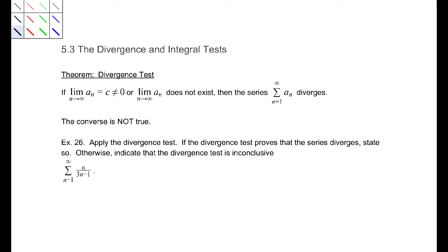Alright, so in this section, we have the divergence test. This is the simplest of all tests that we're going to talk about to determine if a series converges or diverges. And it says that if the limit as n goes to infinity of a_n equals c, some number that's not zero, or the limit does not exist, then that series, the sum from 1 to infinity of a_n, diverges.